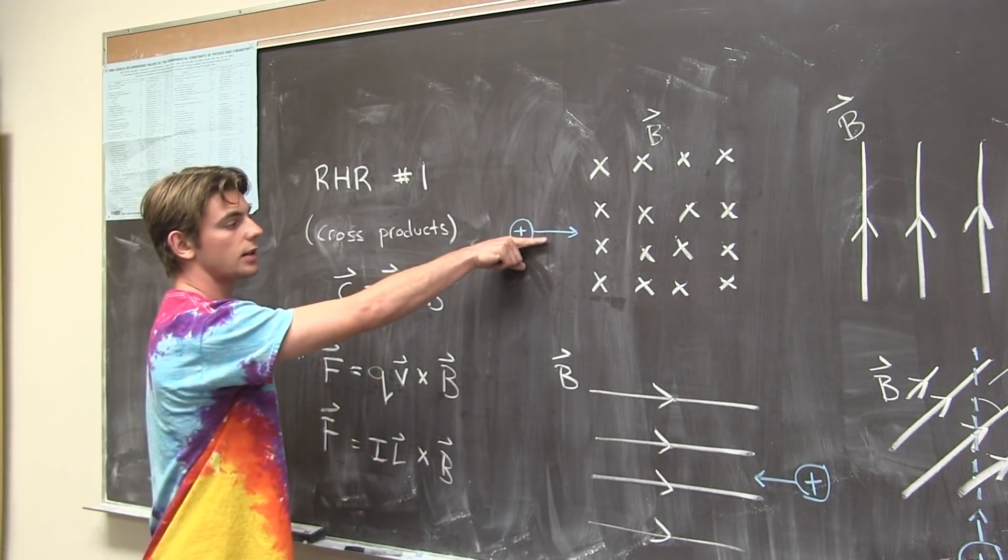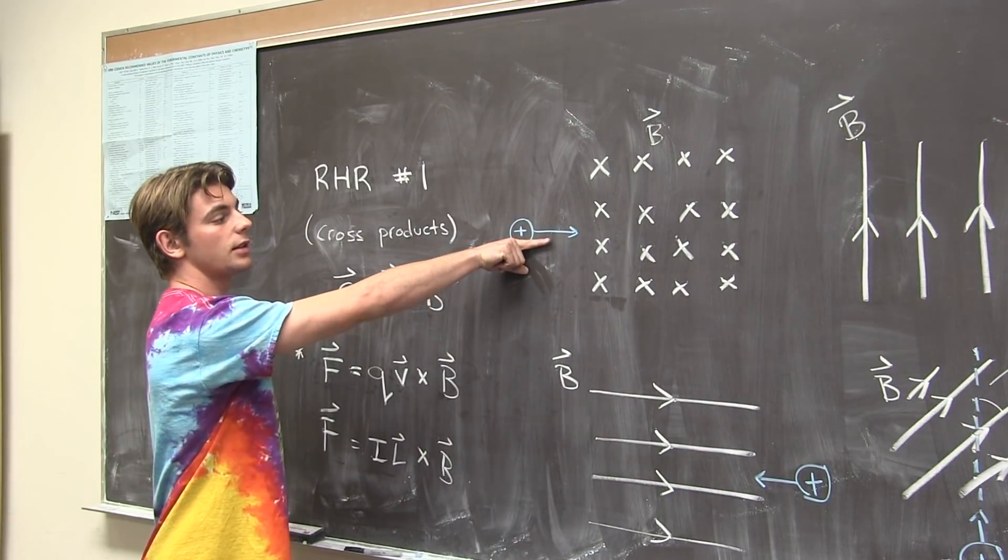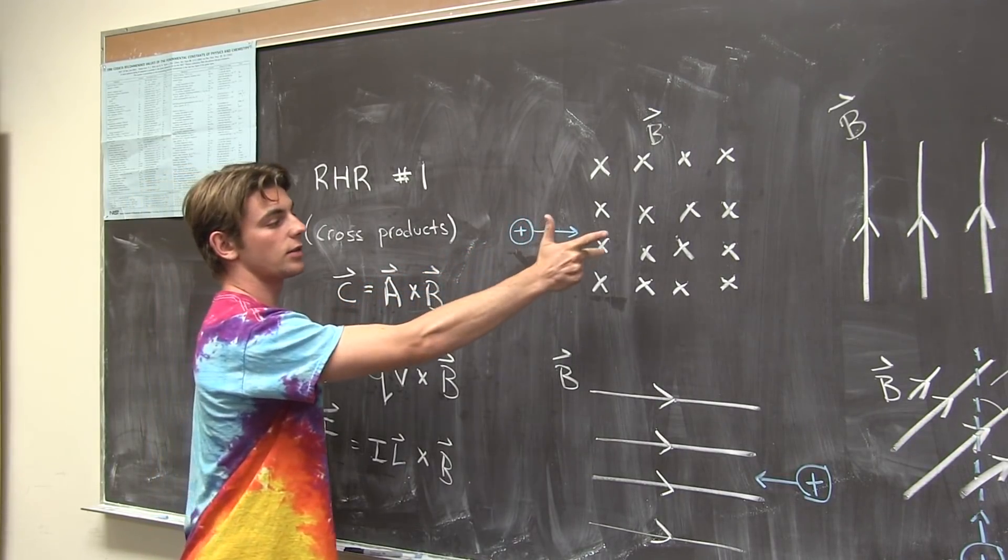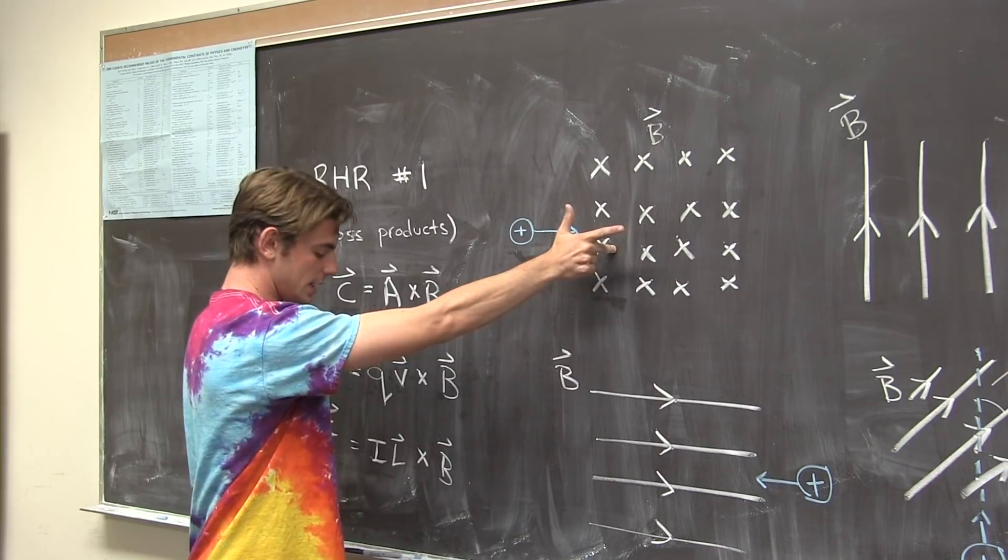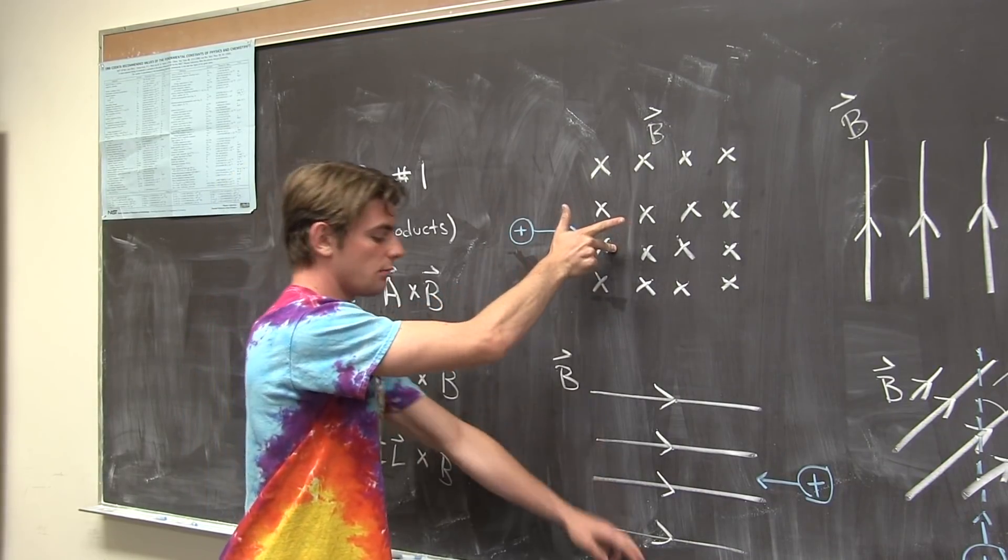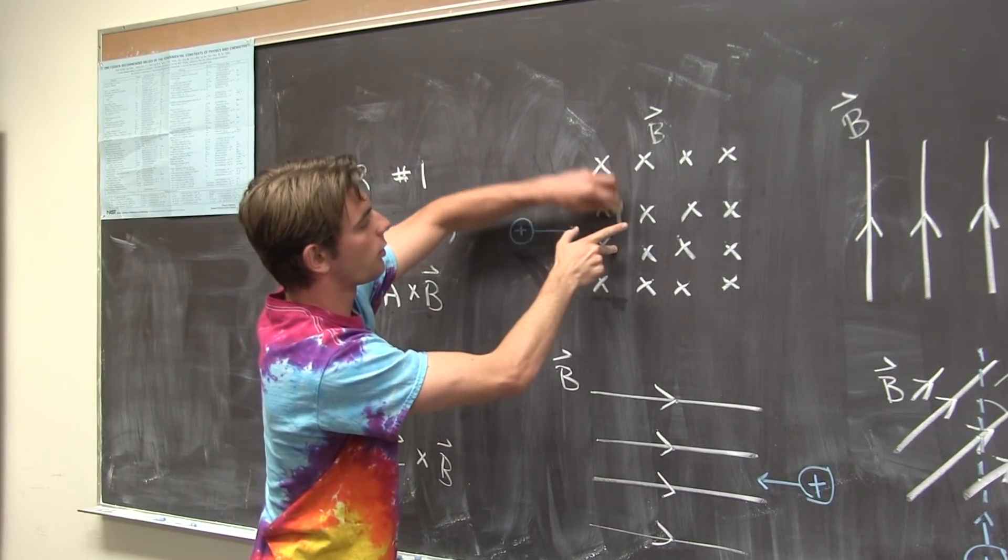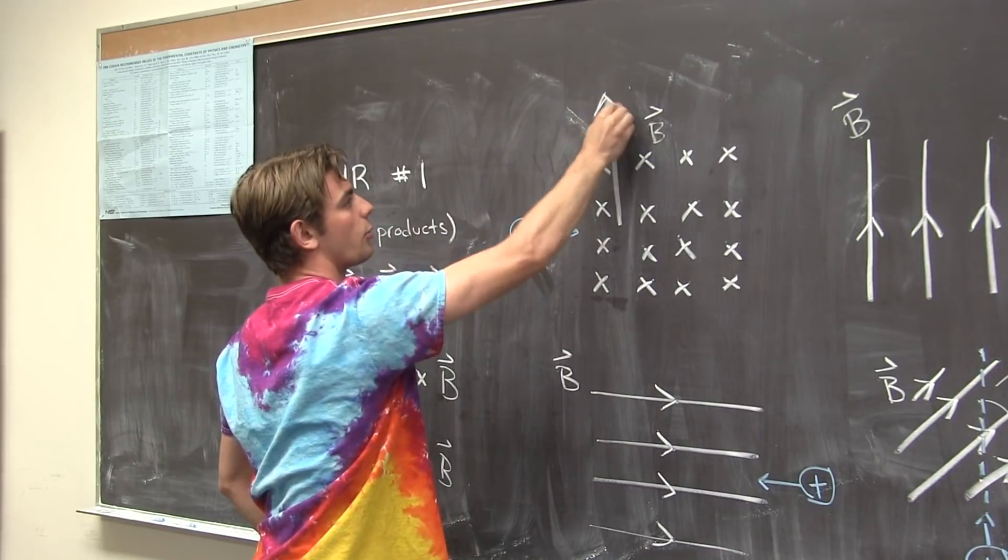The second vector b is our middle finger, that goes into the page, and we can see that our resultant vector must be up. So, our force is in the upward direction.